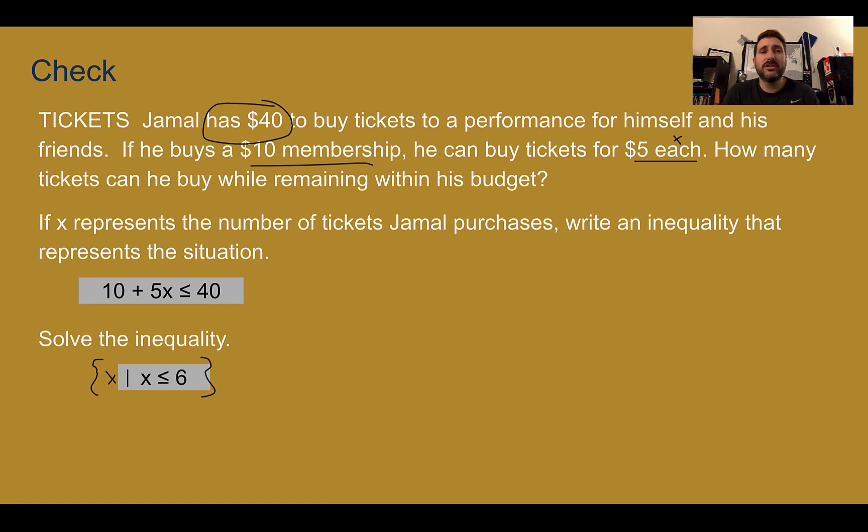This is another situation to be careful of when it's asking you for possible solutions. Can you buy negative tickets? Definitely not. Can you buy half tickets or decimal amounts of tickets? No. So this is one of those discrete functions where you can only buy certain values less than 6 of them. So really just 0, 1, 2, 3, 4, 5, and 6.